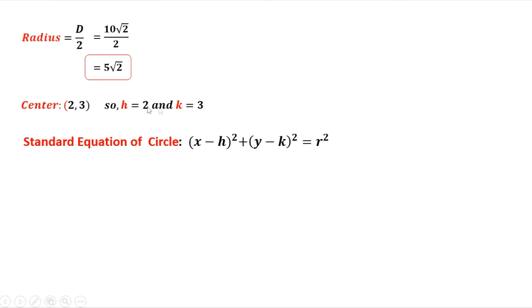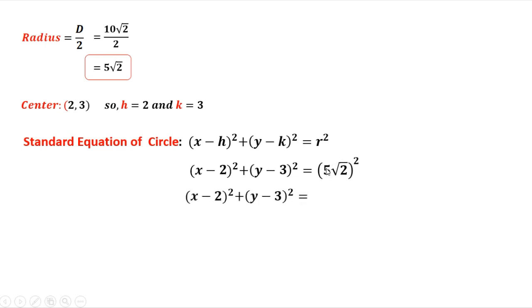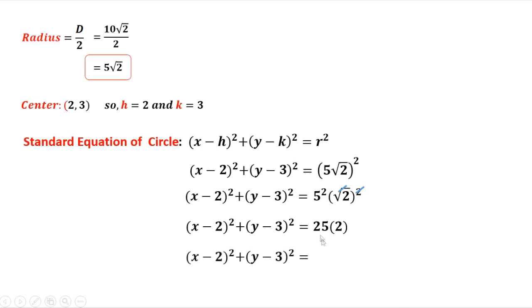Now solve the equation of the circle by substituting: (x - h)² + (y - k)² = r², where h = 2, k = 3, and r = 5√2. Simplifying r²: distribute the exponent to get 5² × (√2)² = 25 × 2 = 50. So this is the equation of the circle: (x - 2)² + (y - 3)² = 50.